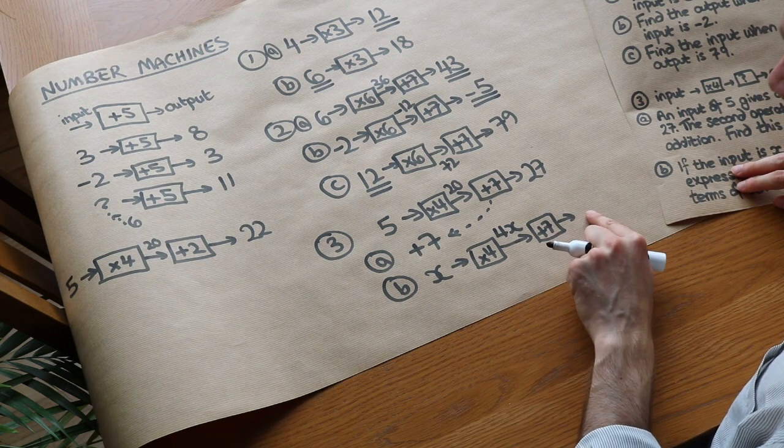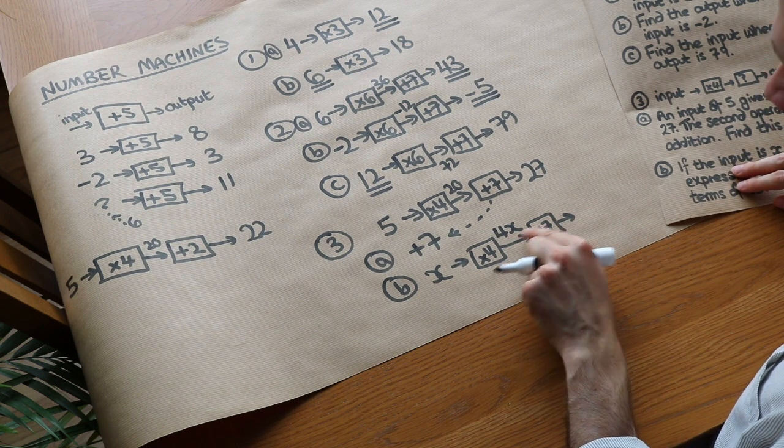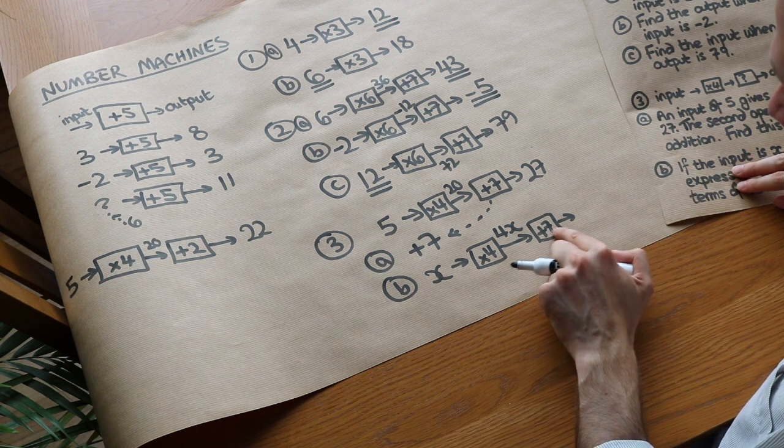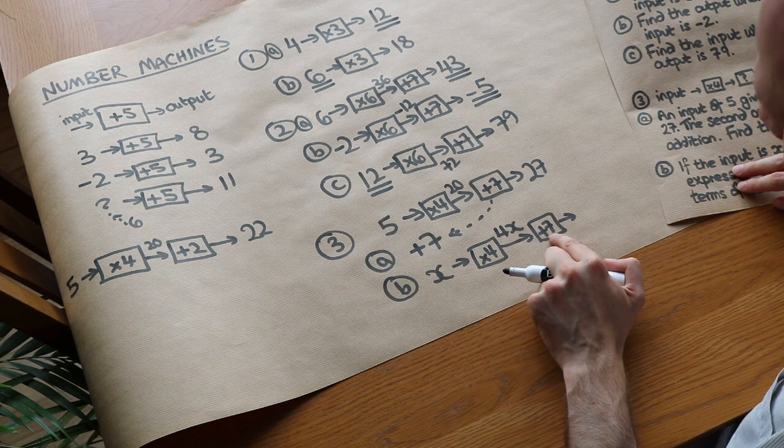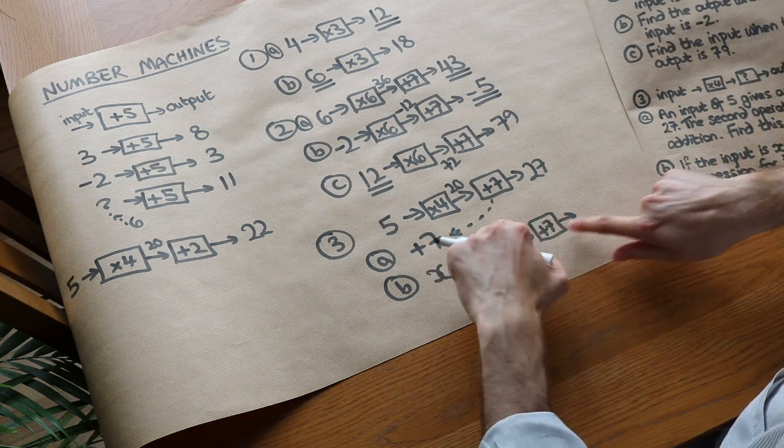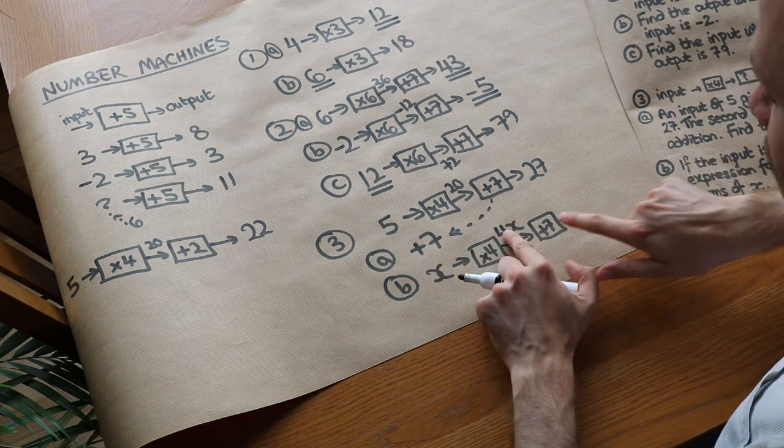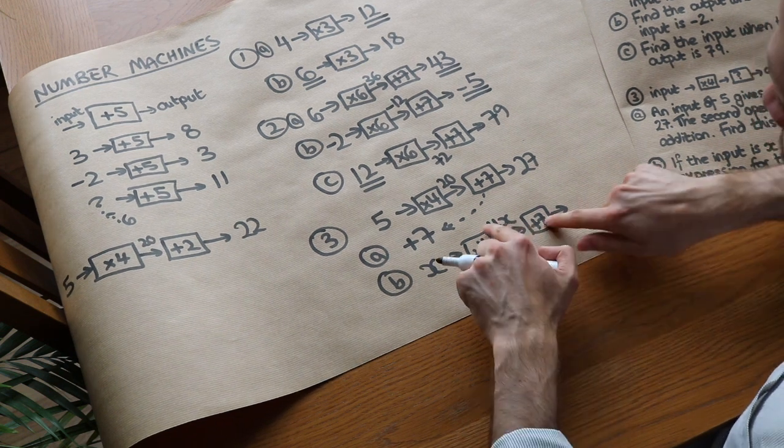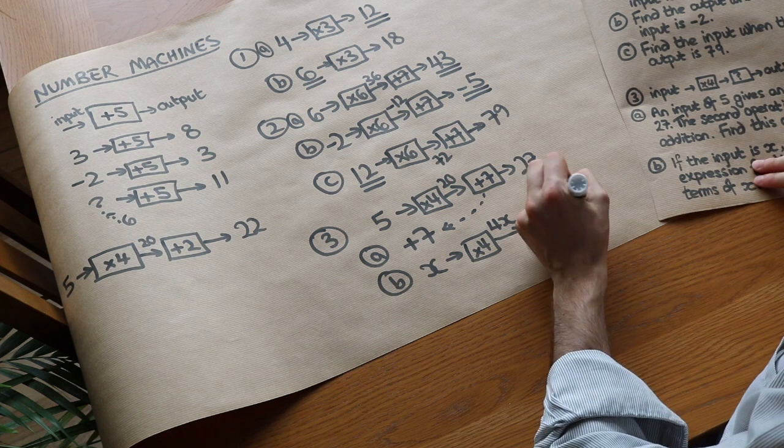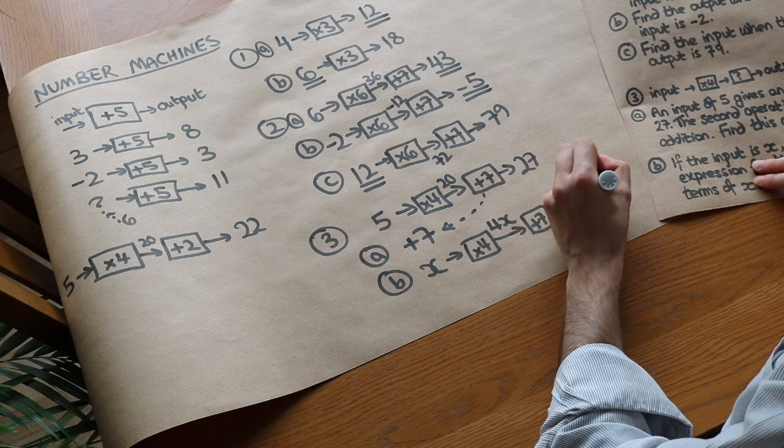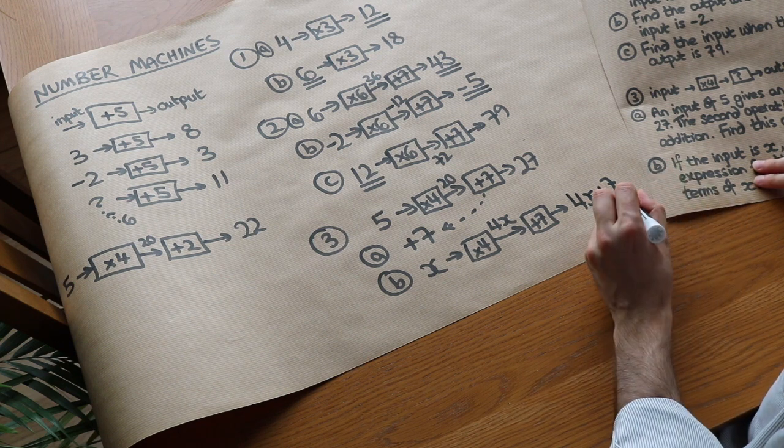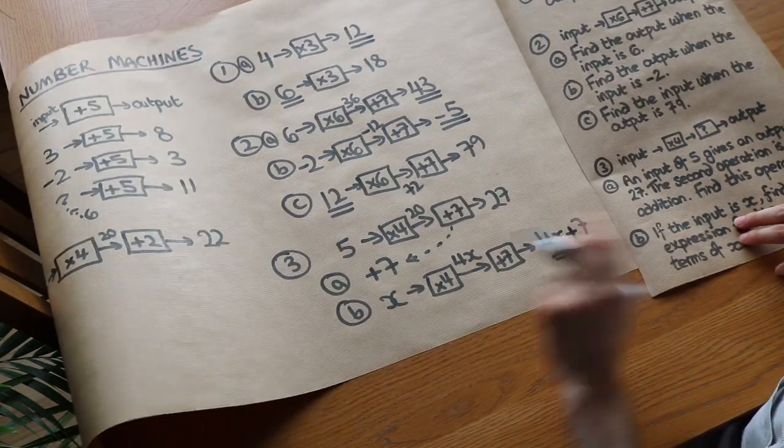Well it would be incorrect to say 11x. That's what a lot of students say. They think 4x plus 7 is 11x. That would only be true if this was plus 7x. If we add 4x plus 7x, then we could collect those like terms to get 11x. But these are not like terms. That's an x term. That's not an x term. It doesn't have an x. So you can't collect them together. So the answer is just 4x plus 7. That doesn't simplify any further. So that is the answer.